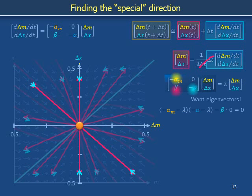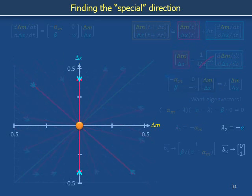We attach minus lambdas to the elements on the main diagonal and form the product of off-diagonal elements to write the characteristic equation describing the eigenvalues, which are minus alpha_m and minus alpha. The eigenvector corresponding to eigenvalue minus alpha defines the direction of the vertical pink arrows. When we list an eigenvector, we give an example with a particular length while thinking of a family of vectors pointing in the same direction with a variety of lengths. Here is a shorter version of vector b2 that fits within the margins of the phase plane.